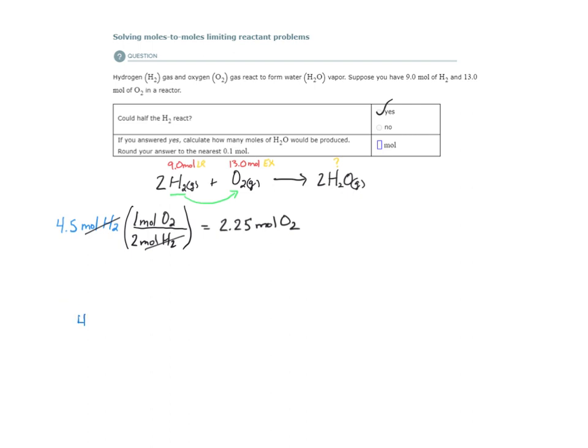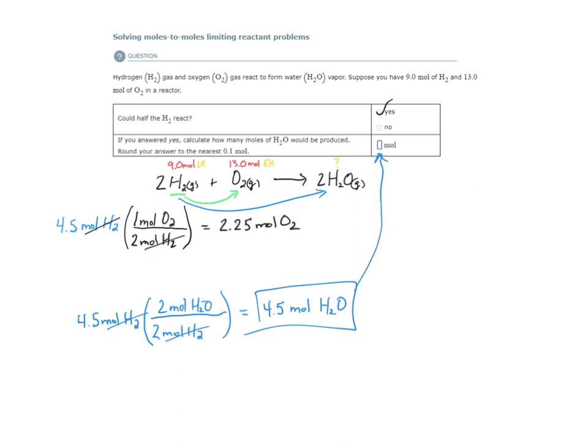So 4.5 moles of H2. Because we're at moles, we can use the coefficients from the balance equation to convert from this substance to this substance. So if I have 4.5 moles of this, how many moles of this will I make? Two moles of H2 react to produce two moles of H2O. I end up with 4.5 moles of H2O. And so that is what we get there.